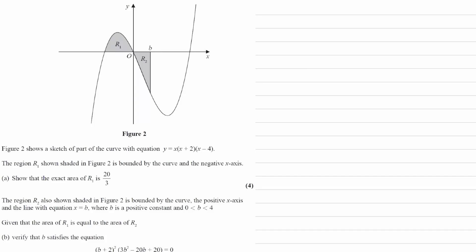Part A and part B for this question are quite straightforward. Part C is where it starts to get tricky. We have figure 2 shows a sketch of part of the curve with equation y equals x times x plus 2 times x minus 4. The region R1 shown shaded in figure 2 is bounded by the curve and the negative x-axis. So here is R1. We're trying to show for part A that the exact area of R1 is equal to 20 over 3.